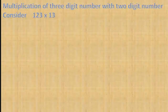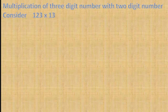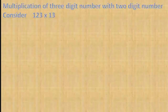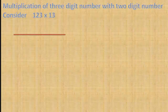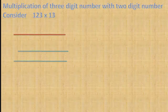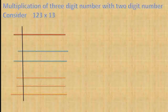Now consider the multiplication of 3 digit numbers with 2 digit numbers. Let us see 123 multiplied by 13. For number 123, draw one horizontal line. By leaving some space, draw two horizontal lines. Again by leaving some space, draw three horizontal lines. For number 13, draw one vertical line.